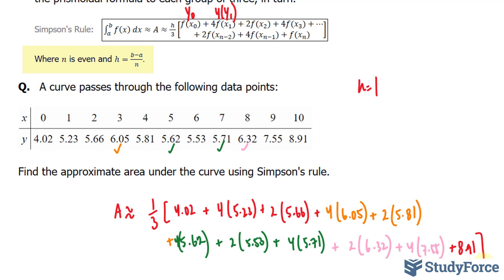Also, one thing I forgot to mention: you should pick an n value that is even if you're not given a table like this.